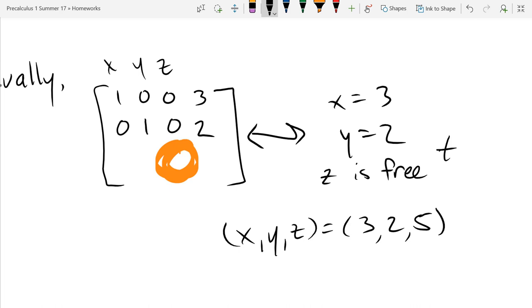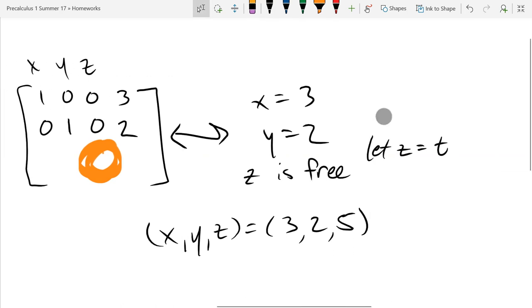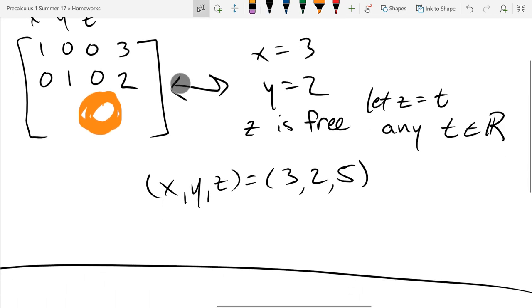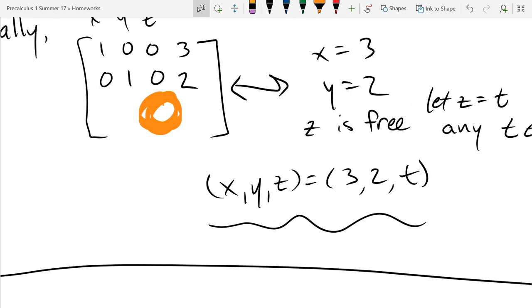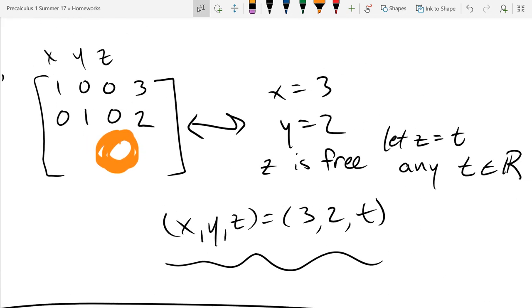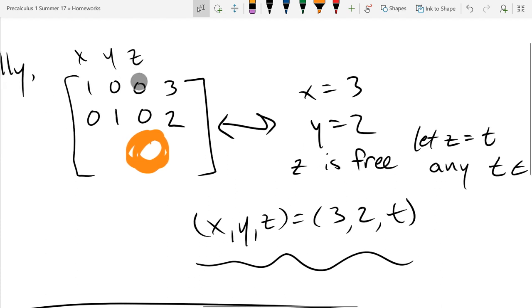We're going to set z equal t, and this is for any real number t. So we can write it like that. And then our answer down here, how does this look? 3, 2, t. So that's what one free variable looks like.